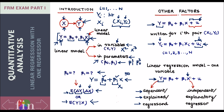On the other hand, x is called the independent variable — y depends on x, but x is independent. X can also be referred to as an explanatory variable, since y's variation is being explained by x. And x is also referred to as a regressor.